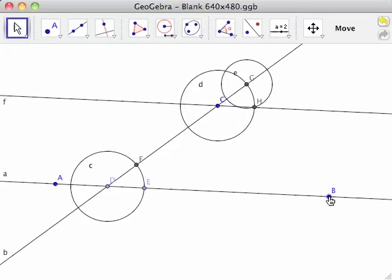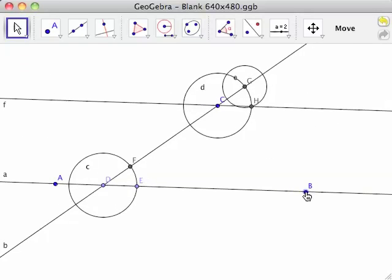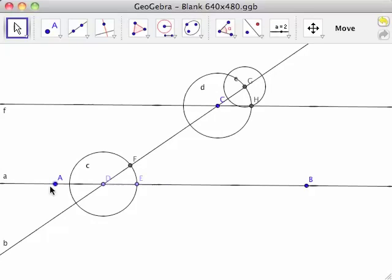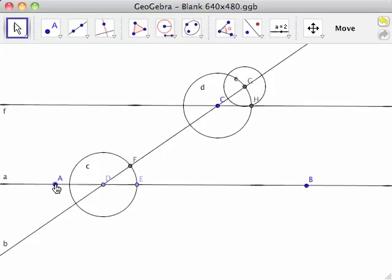Moving points A and B vertically changes the slope of line AB, and therefore changes the slopes of CD and CH. Notice that line CH remains parallel to line AB.